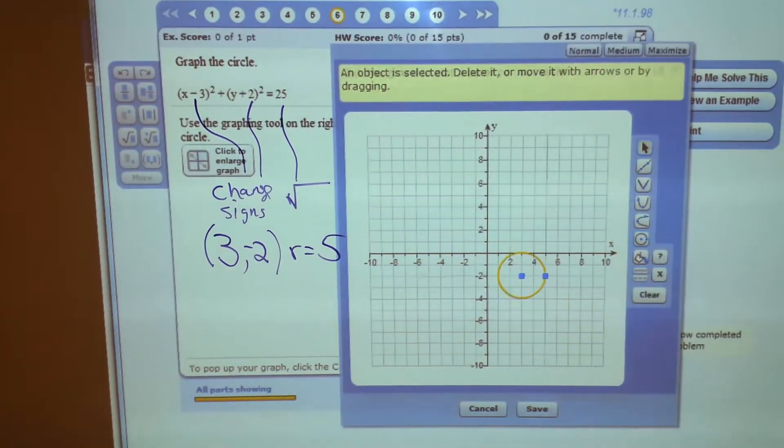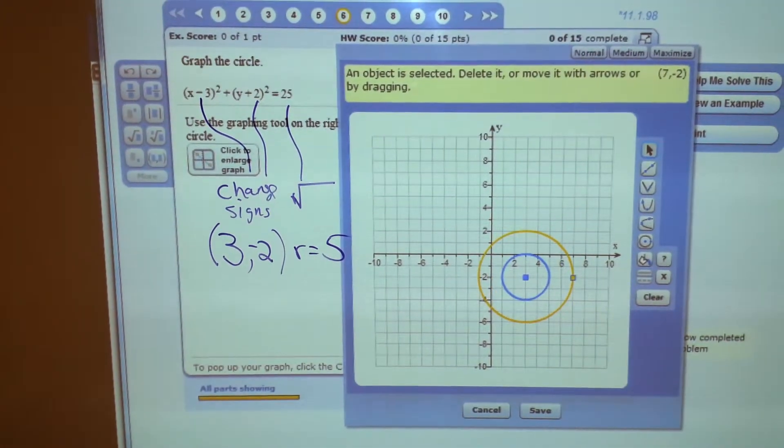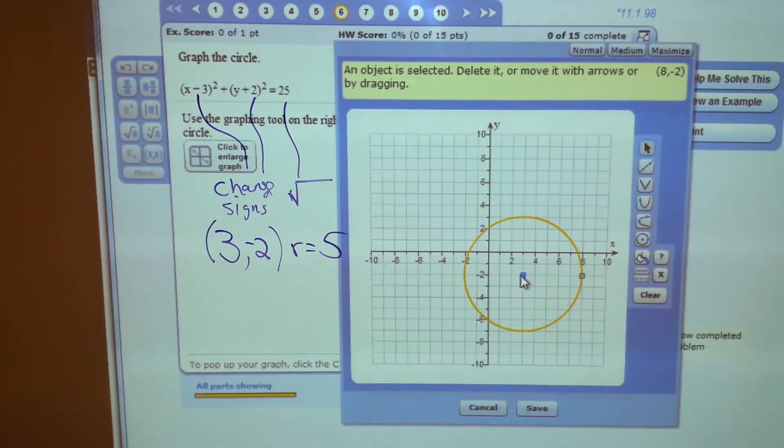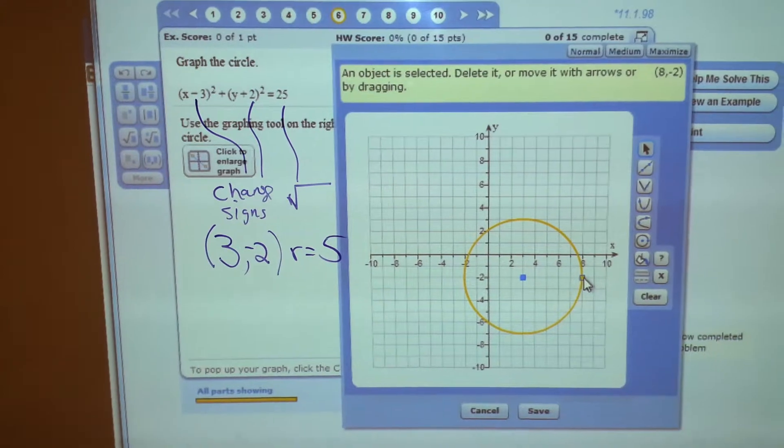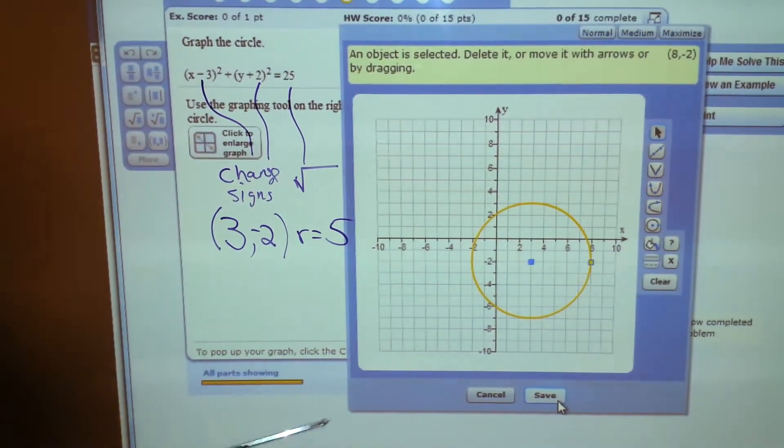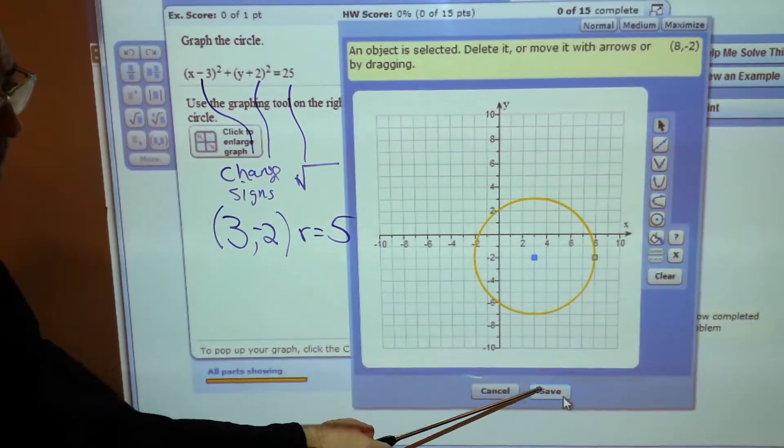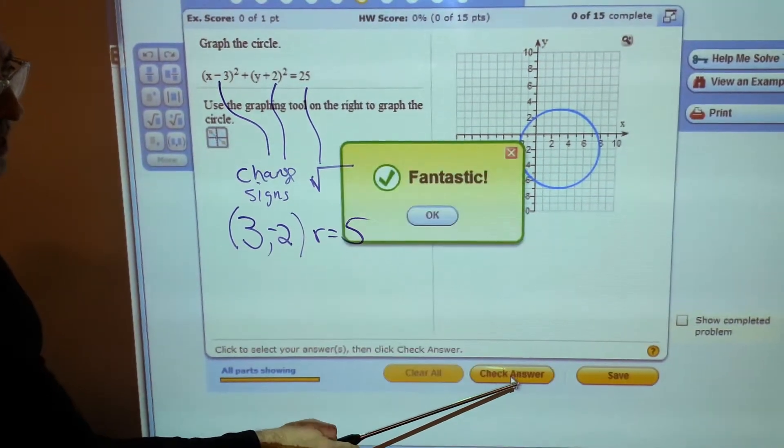1, 2, oops, no, I had it. 1, 2, 3, 4, 5. There. So, I'll click the center, and then I moved out 5 units, the radius. Now, I'll say, so click the center, then move 5 units over. Save it, check it.